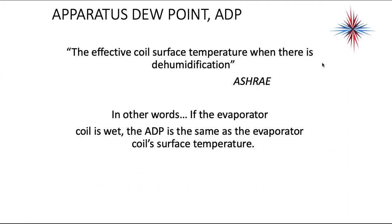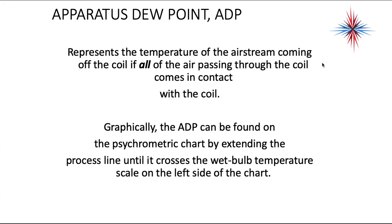Let's first talk about apparatus dew point temperature. ASHRAE says the effective coil surface temperature when there's dehumidification is the ADP. In other words, if the evaporator coil is wet, the ADP is the same as the evaporator coil surface temperature. Coil is wet means it's at its dew point, so the evaporator coil surface temperature is the ADP.